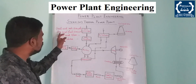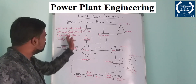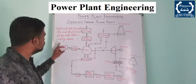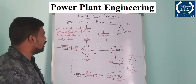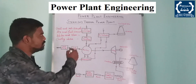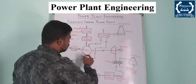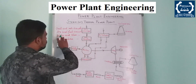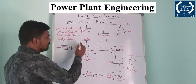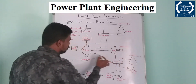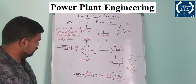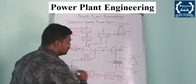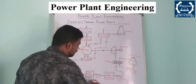The first circuit is the coal and ash circuit. The second circuit is the air and fuel circuit. Next is the water and steam circuit. Next is the cooling water circuit. This is a very easy layout.